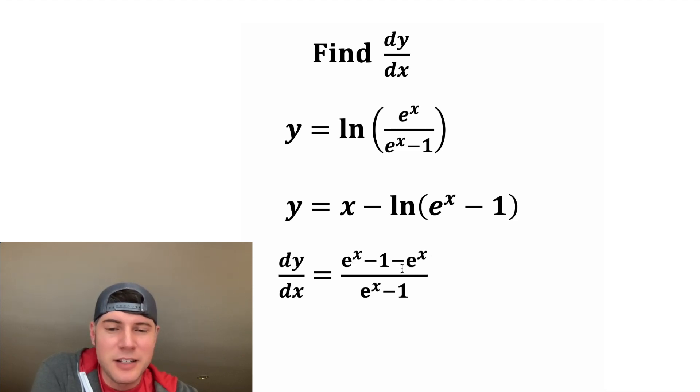And e to the x minus e to the x goes away. And so we're just left with negative 1 over e to the x minus 1. And that's the answer to the question.